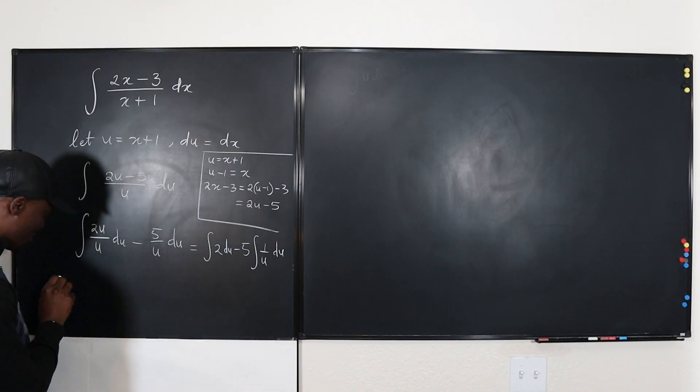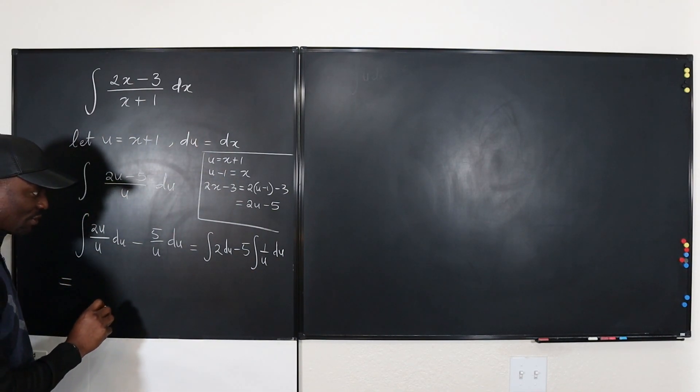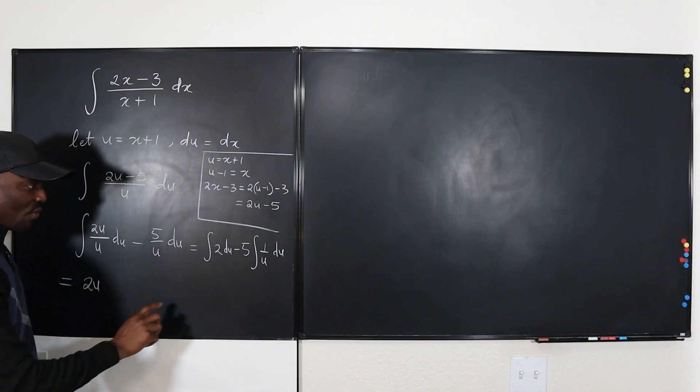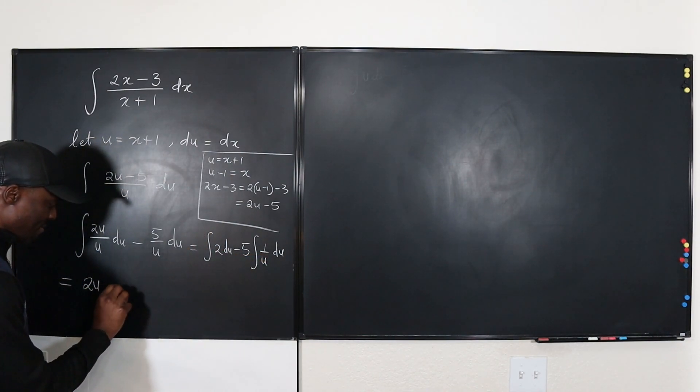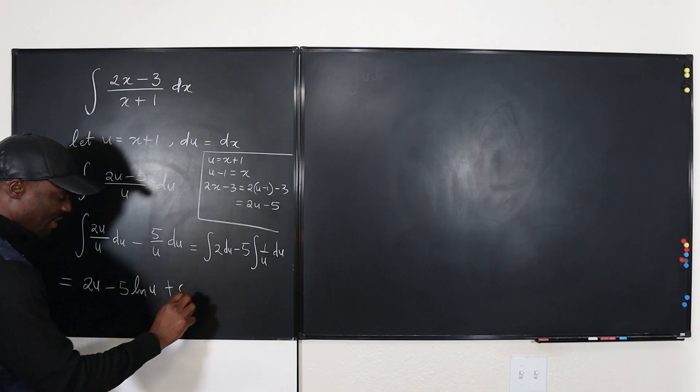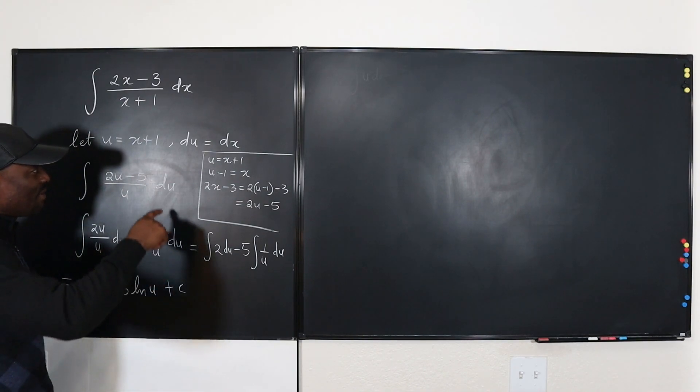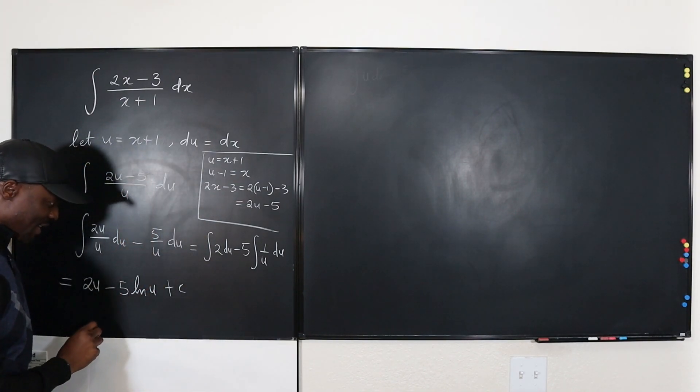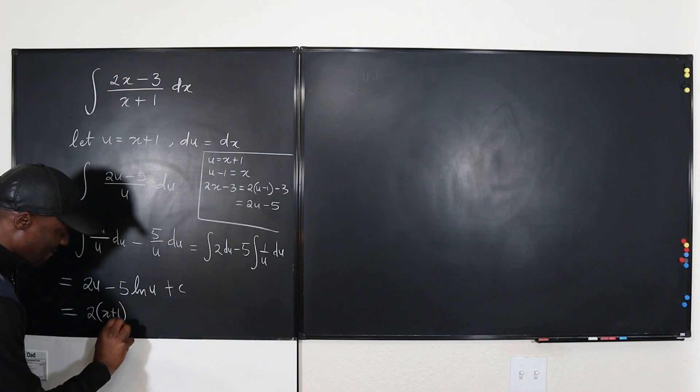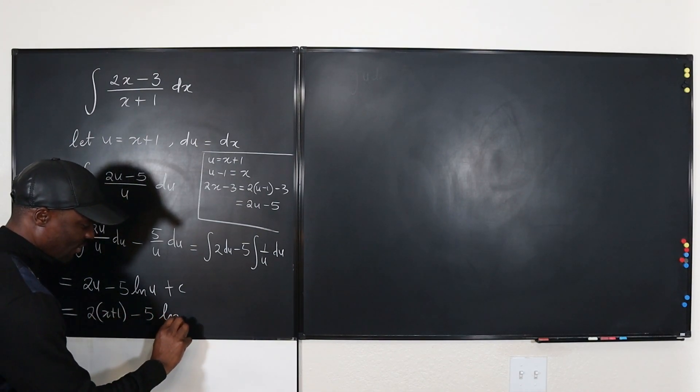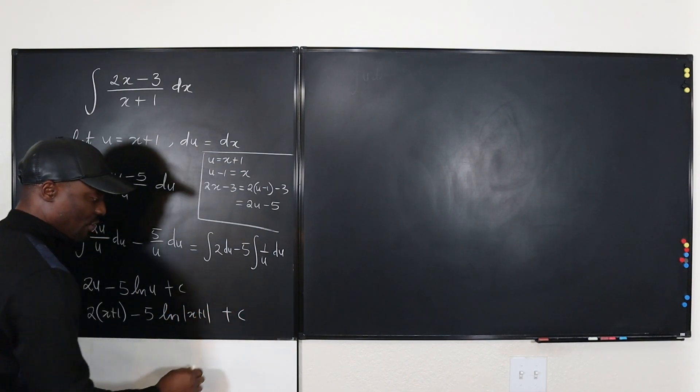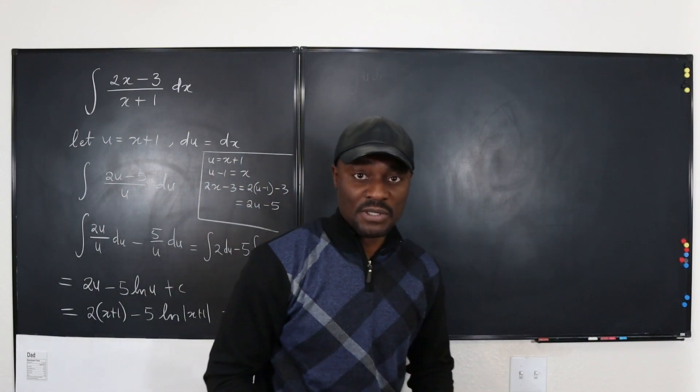So this is what we've got. This is going to be equal to, what is the integral of 2 DU? It's going to be 2U. What's the integral of this? This is going to be minus 5 natural log of U and then plus C. And what did we say U was again from the beginning? It was X plus 1. So we can actually write our final answer here is 2 times X plus 1 minus 5 times the natural log of X plus 1 plus C. We've gotten our answer using U substitution.